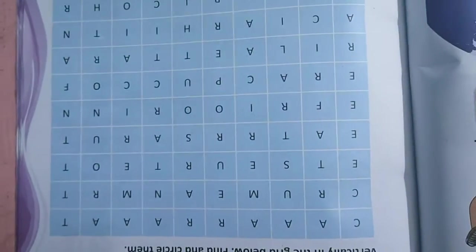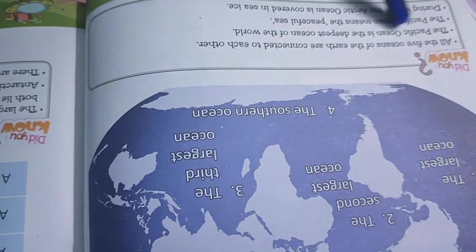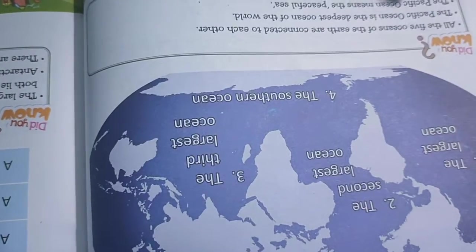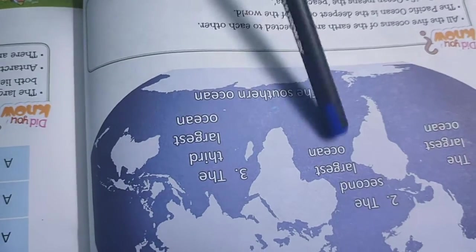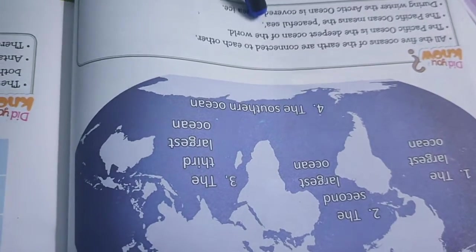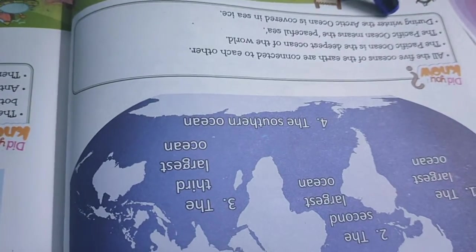Now here are some clues. See, all the 5 oceans of the earth are connected to each other. The Pacific Ocean is the deepest ocean in the world. In MCQ the deepest ocean, then we will give you 3 or 4 names. This is the correct answer. The Pacific Ocean means the peaceful sea. The meaning of Pacific Ocean, then 2-3 will be there. This is the correct answer. During winter the Arctic Ocean is covered in sea ice.